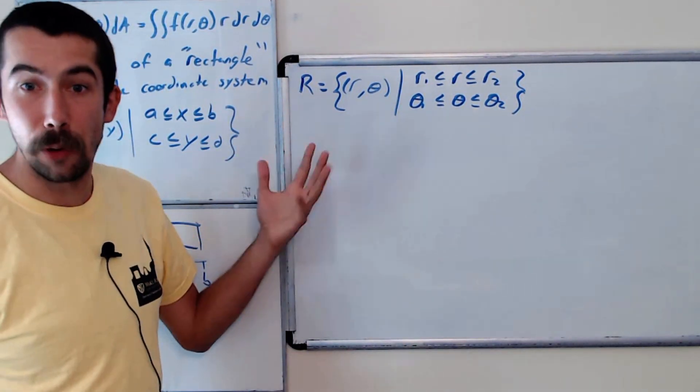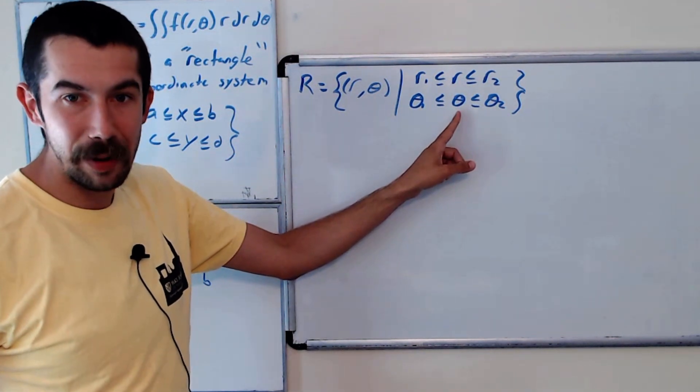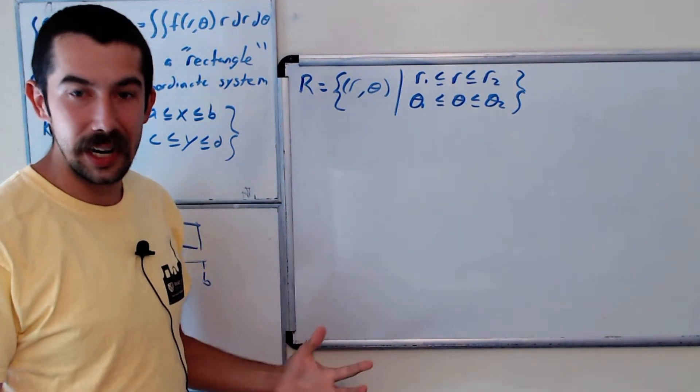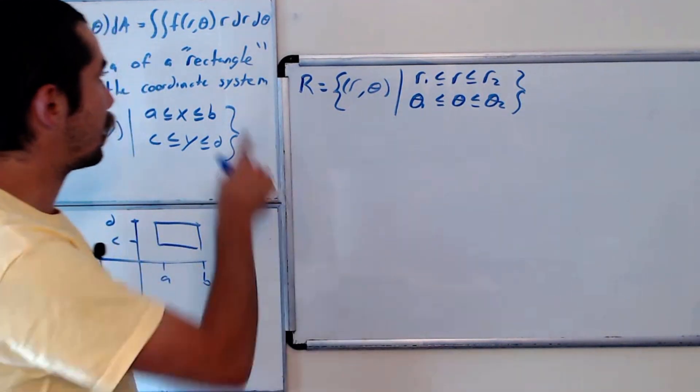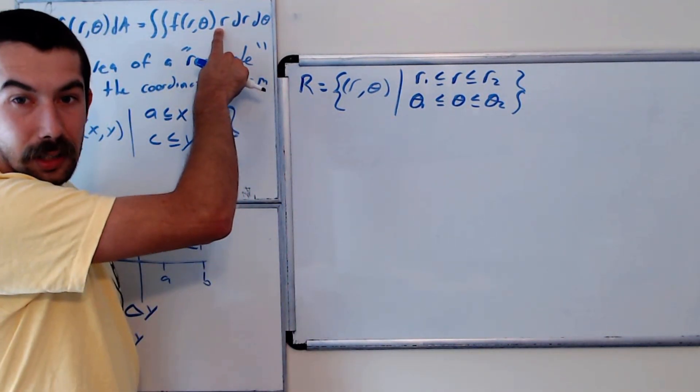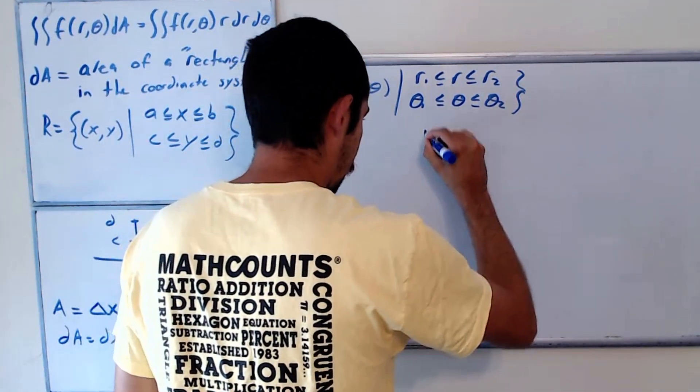So this is what it means to be a polar rectangle. r is bounded by constants, theta is bounded by constants. And now let's take a look at what this shape is, and then we could find the area of the shape. And ideally, we're going to have an r - it's going to depend on r.